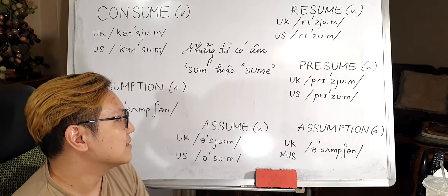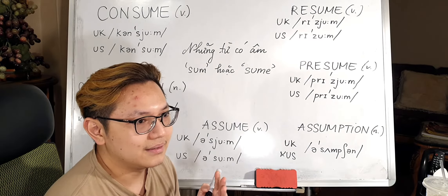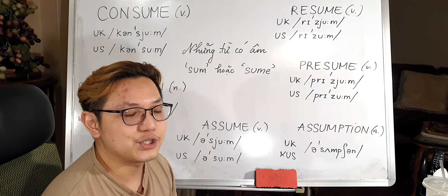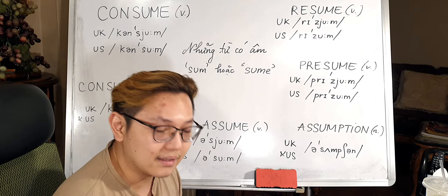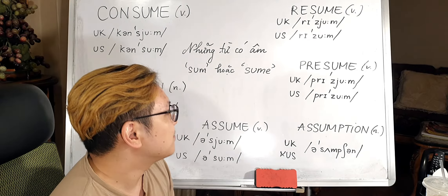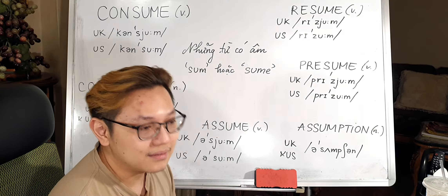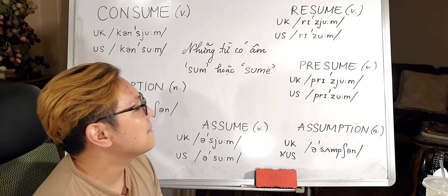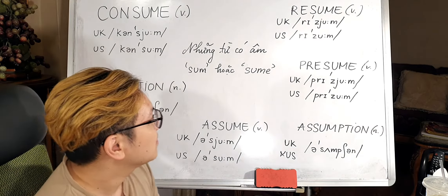'Presume' means: you look at something and it's very likely to be true, but you're not 100% sure. So you believe in something because it's very likely to be true. Khi các bạn nhìn thấy một cái gì đó và các bạn tin tưởng vào nó bởi vì nó rất có tiềm năng là đúng, nhưng mà các bạn không hoàn toàn 100% chắc chắn.